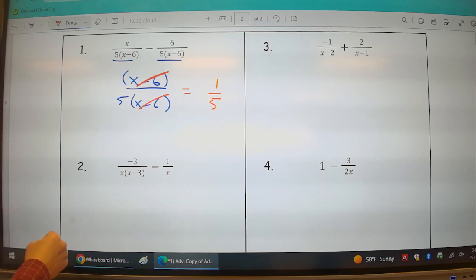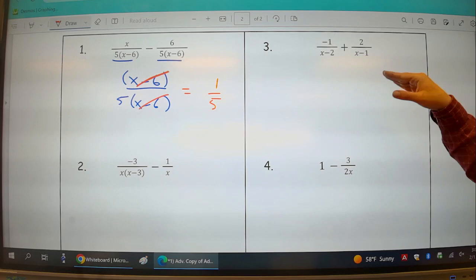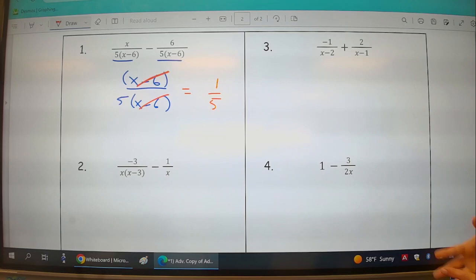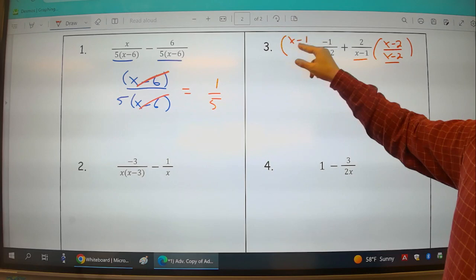Moving across to number three, we have x minus 2 and x minus 1 as my two denominators. Both of these have no common factors with each other. x minus 2, x minus 1, they're on their own. So what I want to do is multiply this by x minus 2 over x minus 2. And now x minus 1 times x minus 2, I can have a common denominator if I multiply this by x minus 1 over x minus 1.